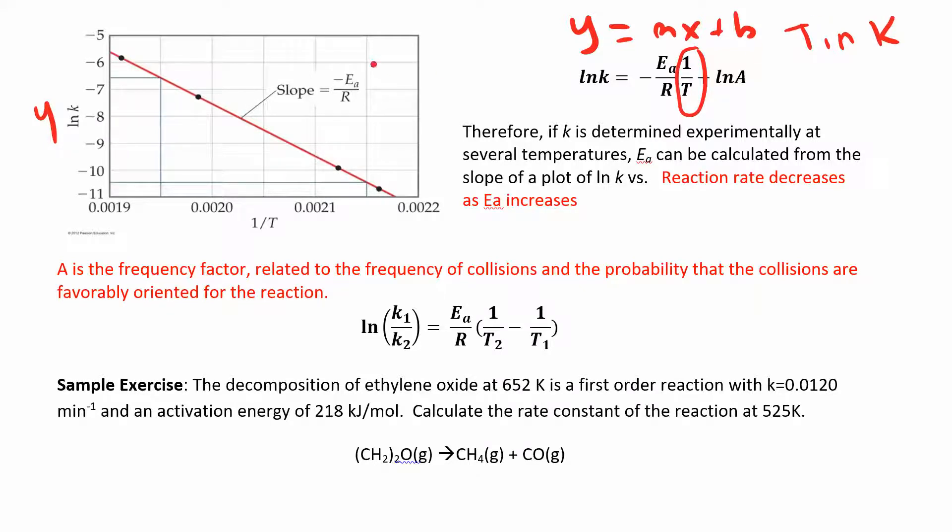Your slope is negative Ea over R. R is that ideal gas constant, 8.314. If you want it in kilojoules, you can do that. Kilojoules per mole Kelvin. Activation energy is usually in kilojoules. So you might as well just get the R in kilojoules.